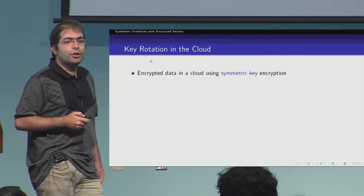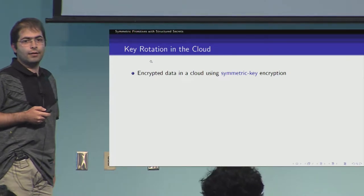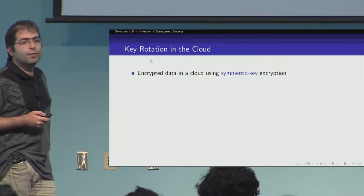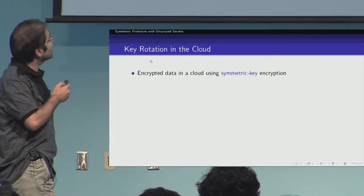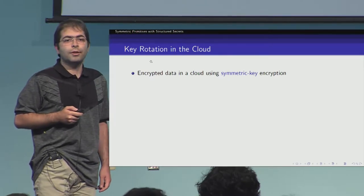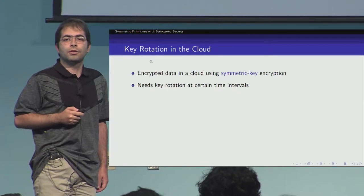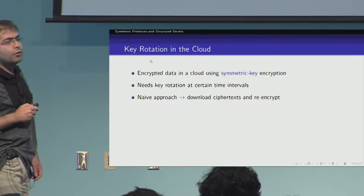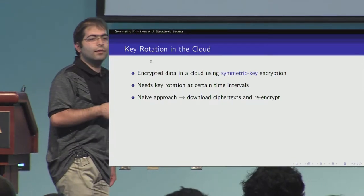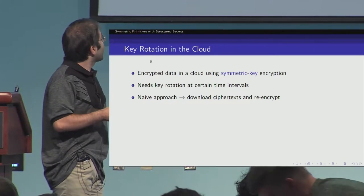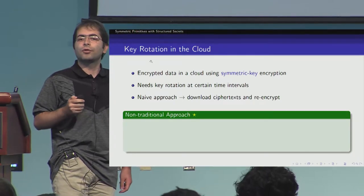Let me start by considering key rotation in the cloud, which is one of the most widely used tools to protect data in the cloud. Suppose that we have some encrypted data in a cloud using symmetric key encryption, and as a security measure we need to do key rotation at certain time intervals. A naive approach would be downloading all ciphertext, re-encrypting using a new key, and then uploading all ciphertext back to the cloud. However, such an approach would be overwhelmingly inefficient and would require more resources.